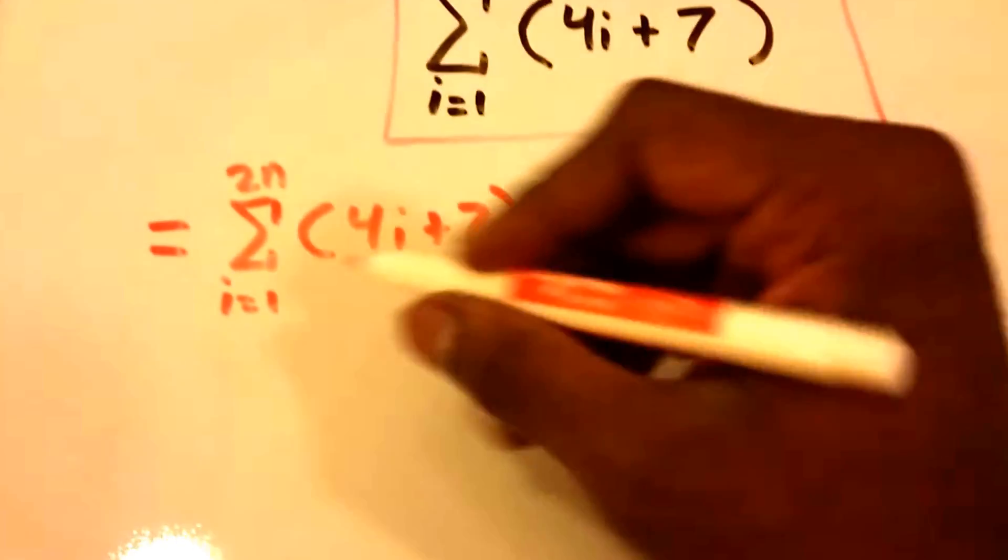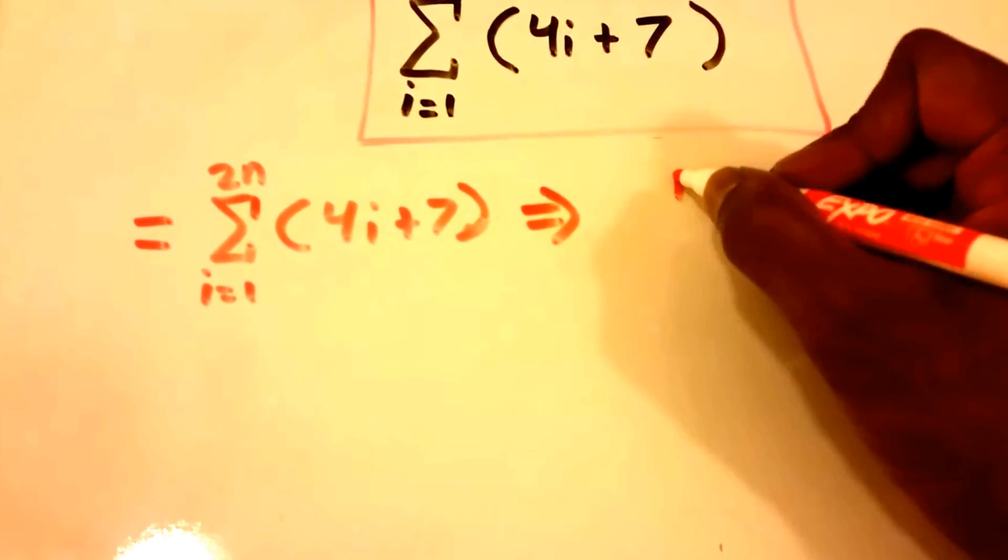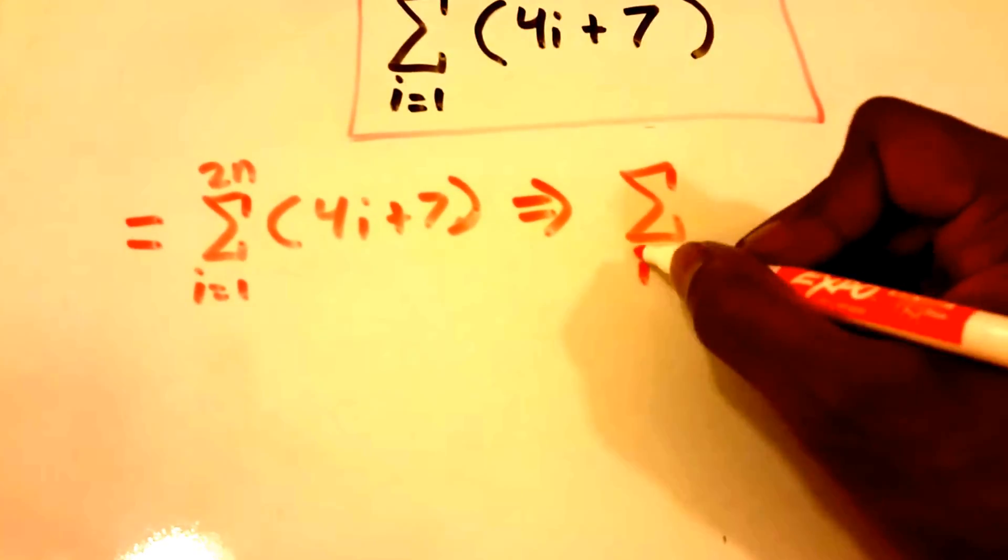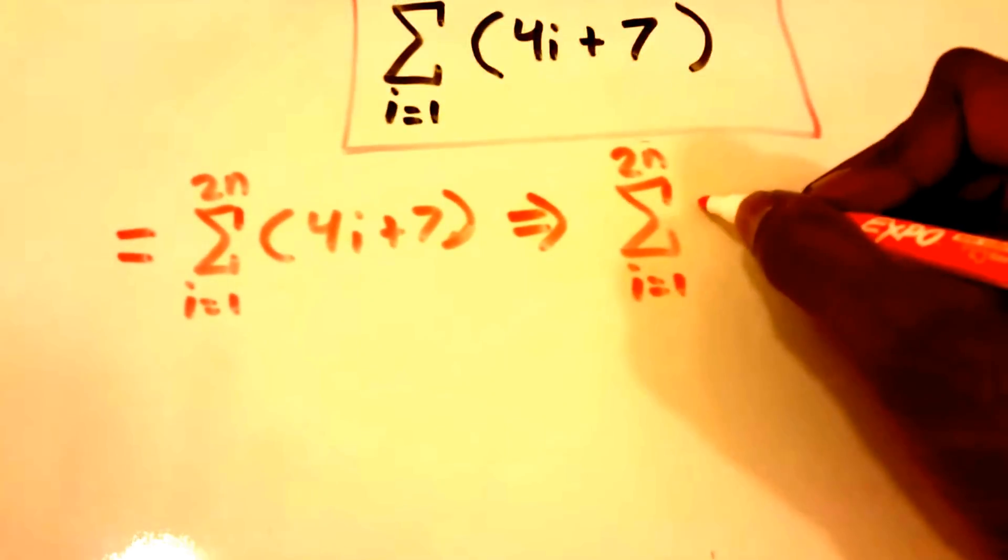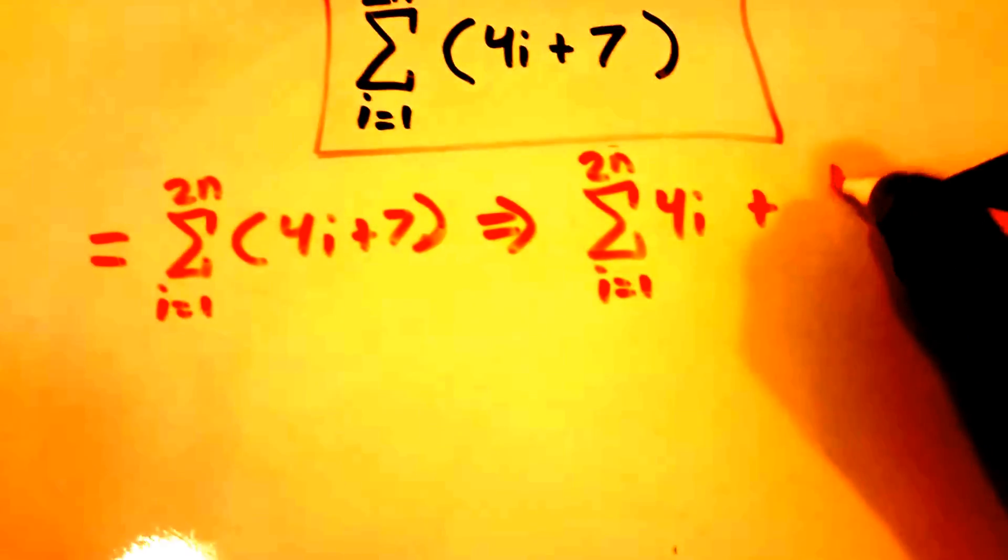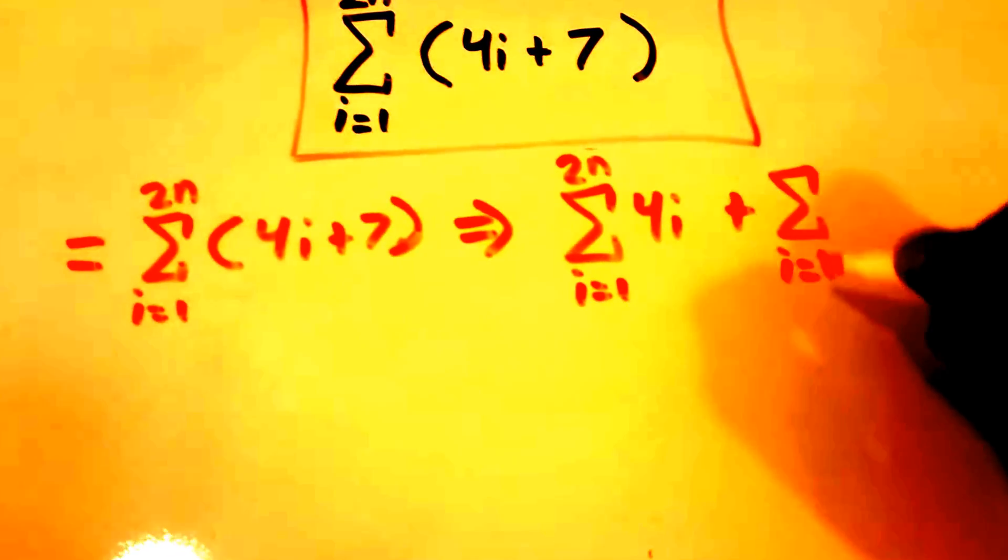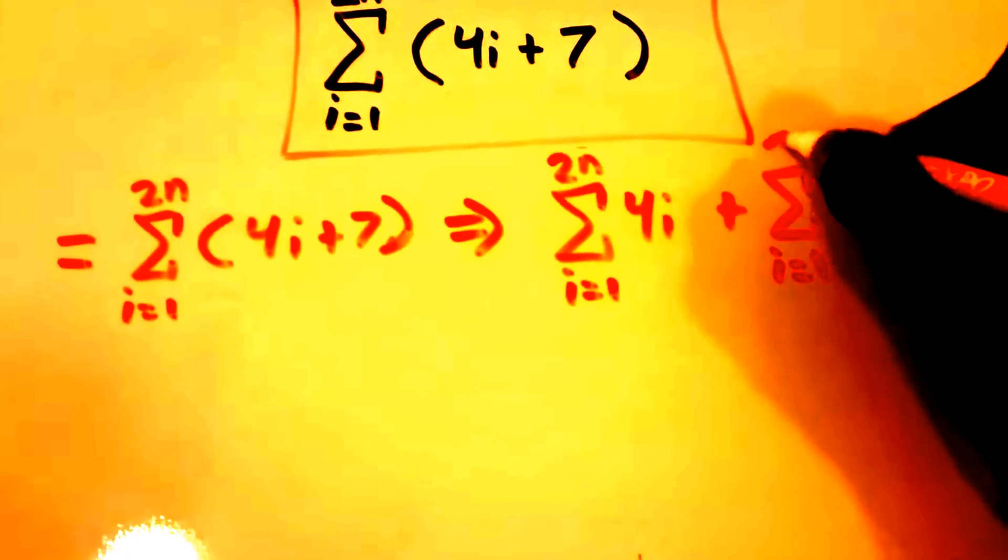So we're going to get two summations: one from i equals 1 to 2 times n of 4 times i, plus another summation from i equals 1 all the way to 2 times n of 7.